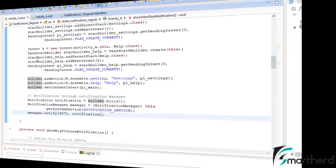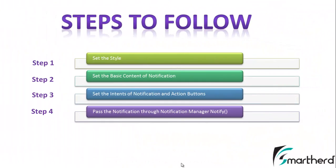Please don't confuse with the codes guys. In order to avoid any confusion, I have defined four steps to create a notification. The first step is to set the style of the notification if required — whether it is a picture style, inbox style, or big text style. The second step is to set the basic content of the notification. The third is to set the intents of the notification and the action buttons if you are using — create an intent, set that to pending intent, and finally set that to the builder.